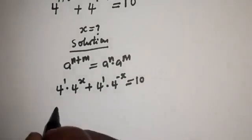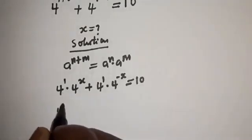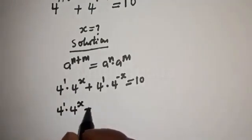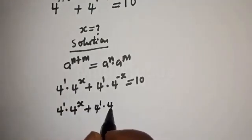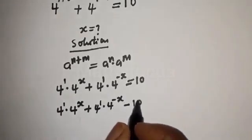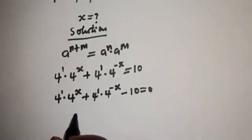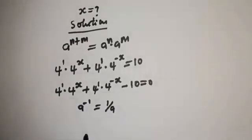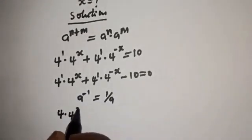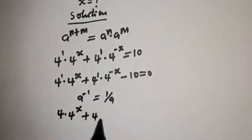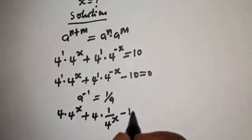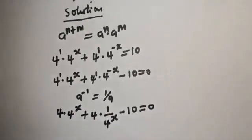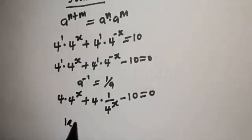Let's bring the 10 to this side: 4 raised to power 1 multiplied by 4 raised to power x, plus 4 raised to power 1 multiplied by 4 raised to power minus x, minus 10 is equal to 0. Now take note that if you have a raised to power minus 1, this is equal to 1 over a. So we have 4 multiplied by 4 raised to power x, plus 4 multiplied by 1 over 4 raised to power x, minus 10 is equal to 0. Now let 4 raised to power x equal t.